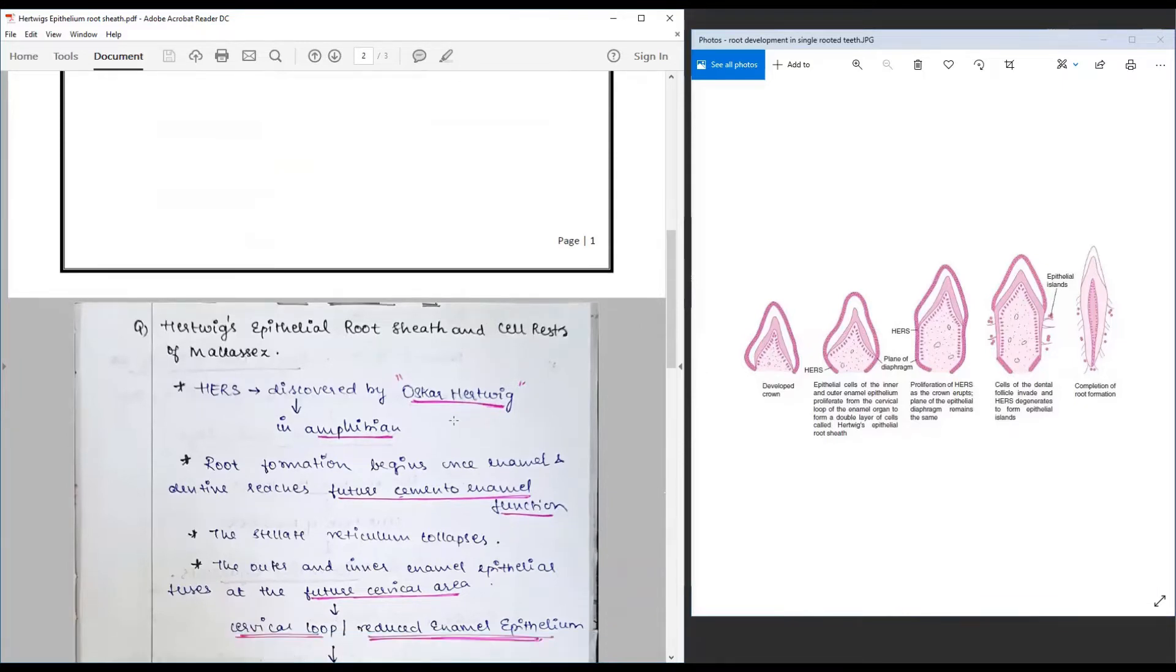Root formation begins once the enamel and dentin reaches its future cemento-enamel junction, or rather to be very precise, when the crown formation gets over. At this point, the stellate reticulum and stratum intermedium collapses because all the nutrition is exhausted.